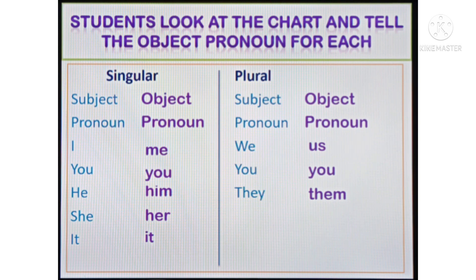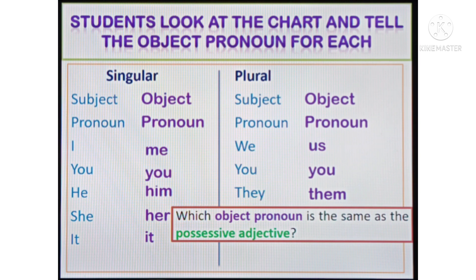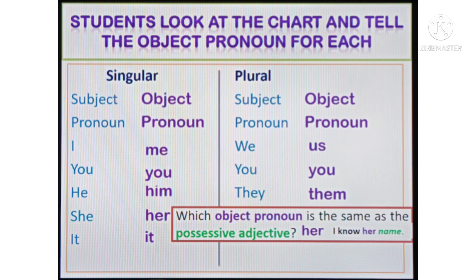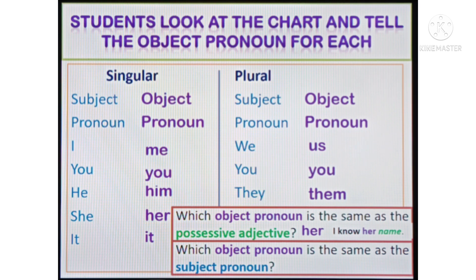Let's check some sentences. Which object pronoun is the same as a possessive adjective? Good job — 'her.' That's correct: 'I know her name.' Which object pronoun is the same as a subject pronoun? Very good — that is correct: 'you' and 'it.'